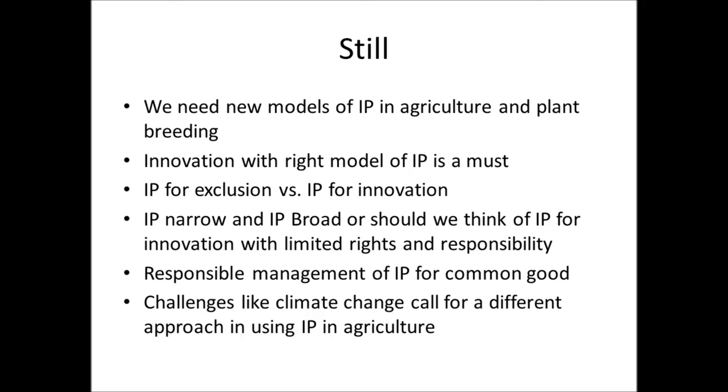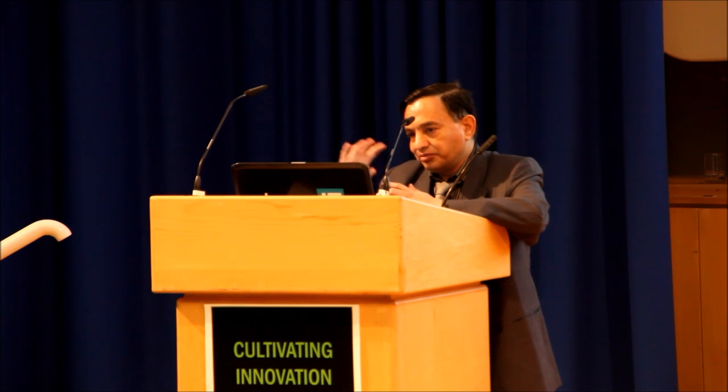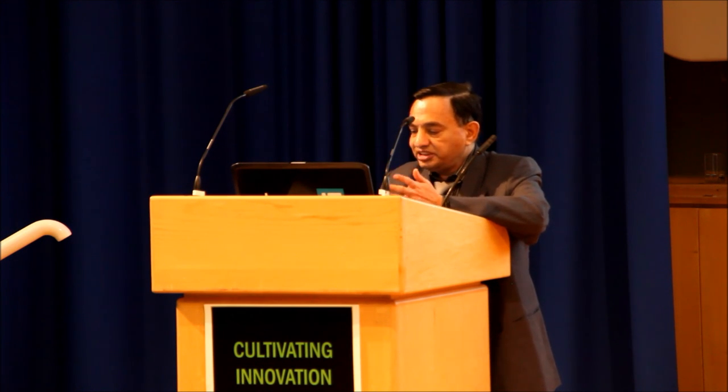In summary, we need new models for IP in agriculture, plant breeding, and innovation — with the right model of IP. Should we think of IP as narrow or broad, or should we think of IP for innovation with limited rights and responsibility? I would link this idea of responsibility to the concept of responsible research and innovation, applying it to plant breeding and agriculture. Responsible IP for common good is preferable over IP for exclusion. Challenges like climate change call for a different approach in using IP in agriculture, where we can use the open innovation model for IP management in the context of climate change. Thank you for listening.